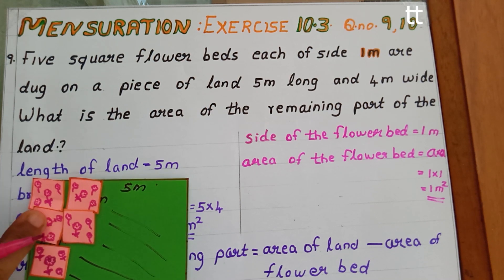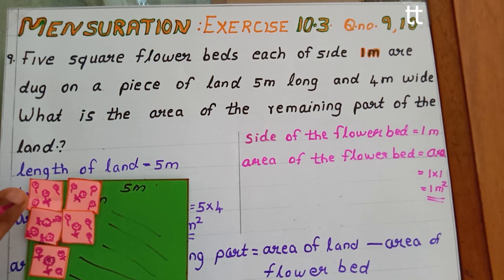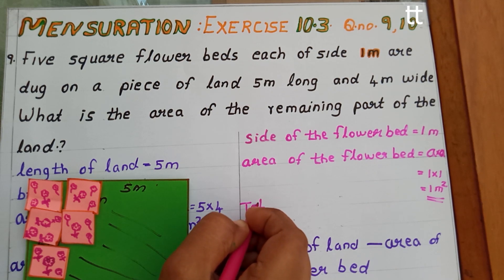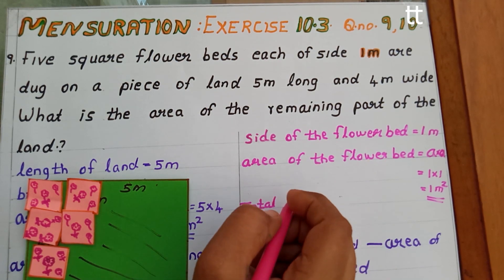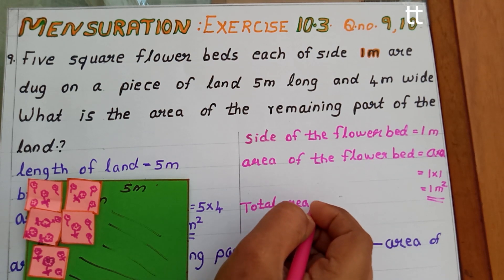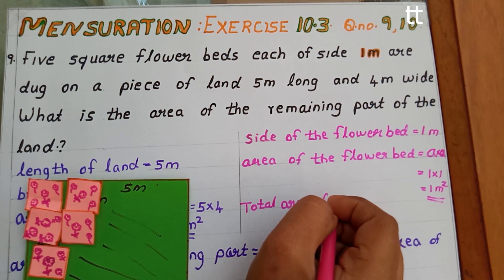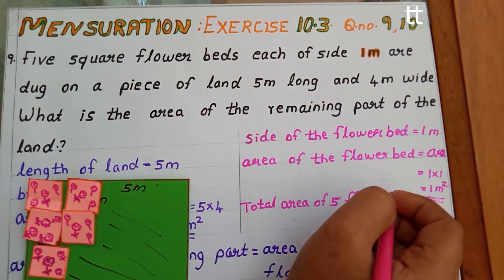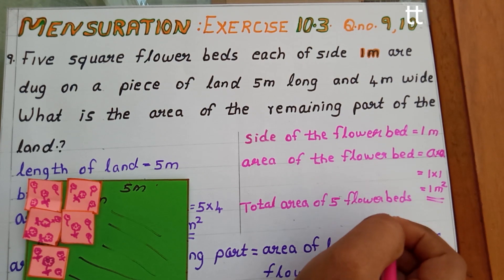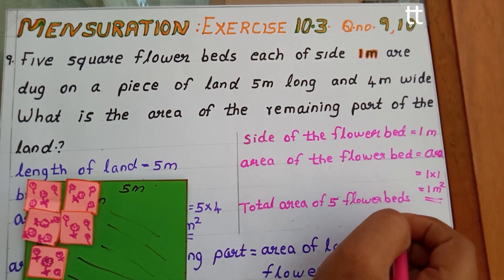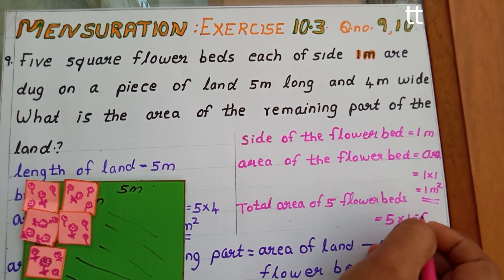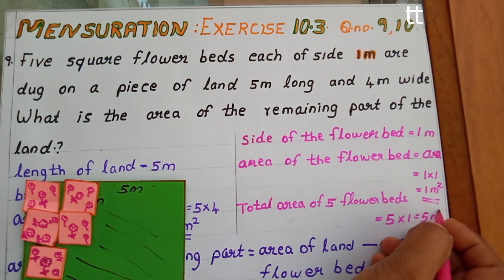There are 1, 2, 3, 4, 5 square beds, so the total area of 5 flower beds equals 5 × 1 equals 5 meter square.